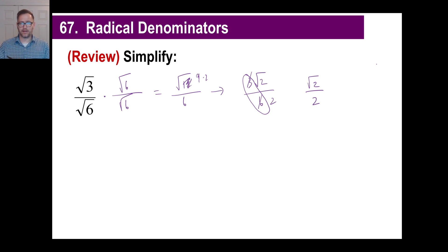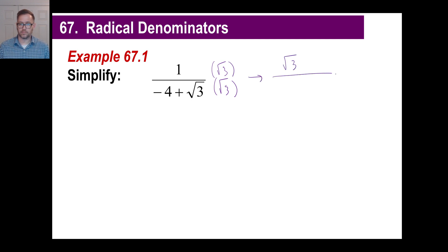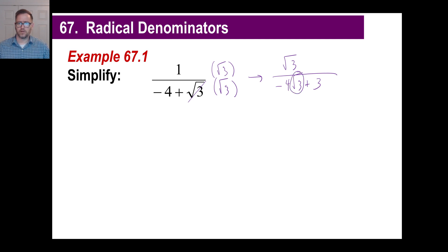The idea is that your denominator should have no irrational number in it — square roots that don't work out as integers are irrational. You might think you're just going to multiply by the square root of 3 here. If you do that, you get the square root of 3 up top, and the square root of 3 times the square root of 3 is just 3. But then the square root of 3 times negative 4 is negative 4 square root of 3 — I still have a square root here. It didn't work.